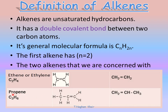The second alkene is propene. Its molecular formula is C3H6. Here we have the structural formula. This is the double bond — we can place it here or here; it is the same. And here is the condensed structural formula.